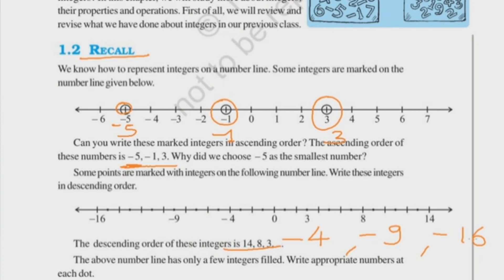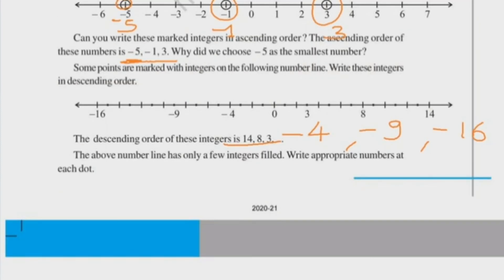The above number line has only a few integers filled. Write appropriate numbers at each dot. See, the descending order we had was incomplete, we completed it. So that's it for this video. We will meet in the next video. Thank you.